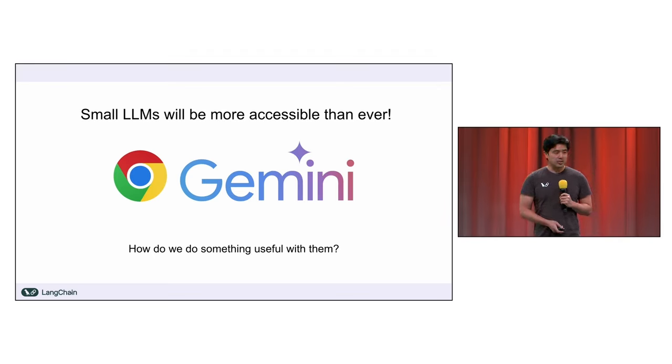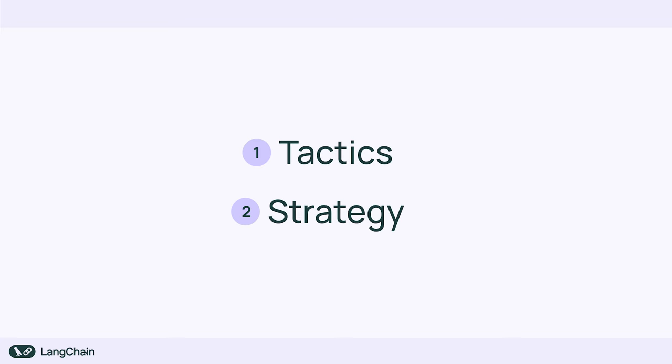What I'd like to explore today is how we can do something useful with them. I'm going to be breaking this down into mostly two steps: the first being tactics, and the second strategy. Tactics being improving individual calls and single chat-type use cases, and strategy being how to get the LLM the right broad awareness of the problem you're trying to solve. So let's set the stage with some tactics.